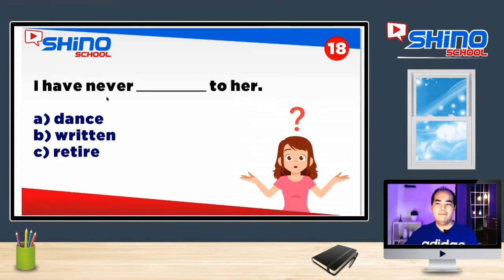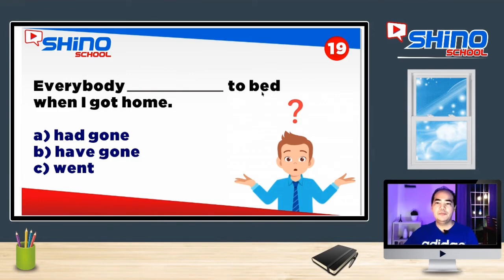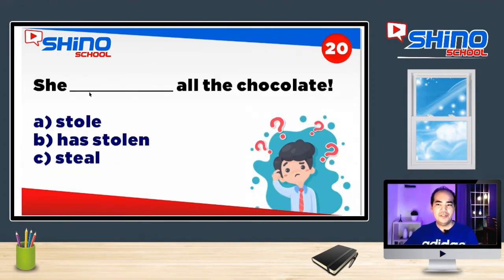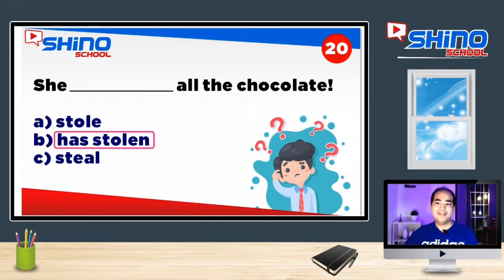Pergunta de número 18: I have never ___ to her. Letra A: dance. Letra B: written. Letra C: retire. Resposta correta, letra B: written. Pergunta de número 19: Everybody ___ to bed when I got home. Letra A: had gone. Letra B: have gone. Letra C: went. Resposta correta, letra A: had gone. E a pergunta de número 20: She ___ all the chocolate. Letra A: stole. Letra B: has stolen. Letra C: still. Resposta correta, letra B: has stolen.